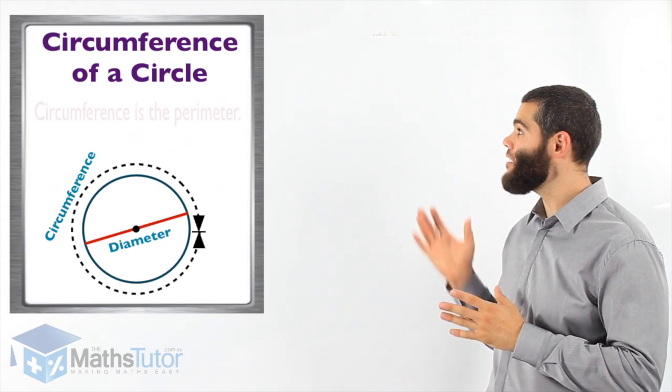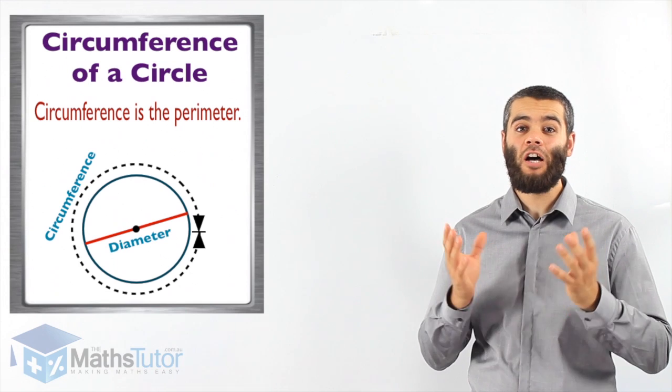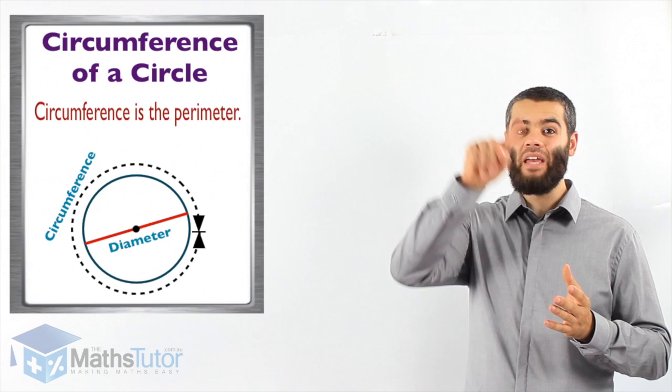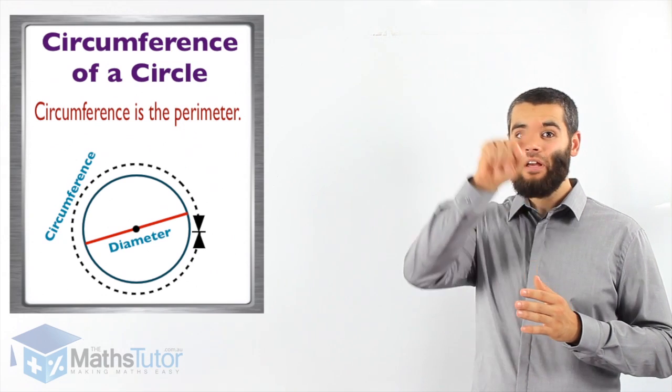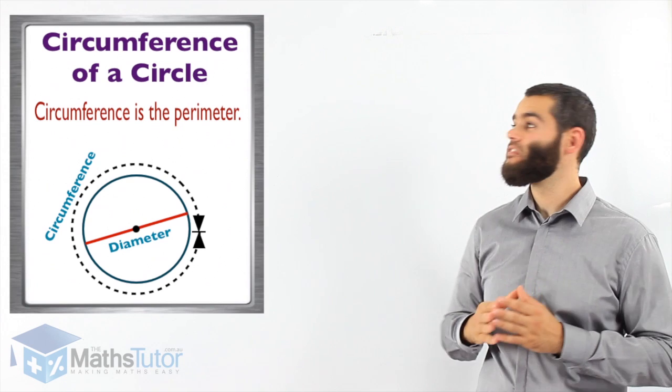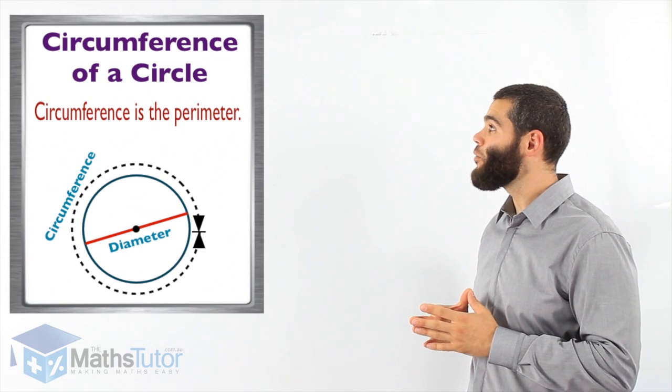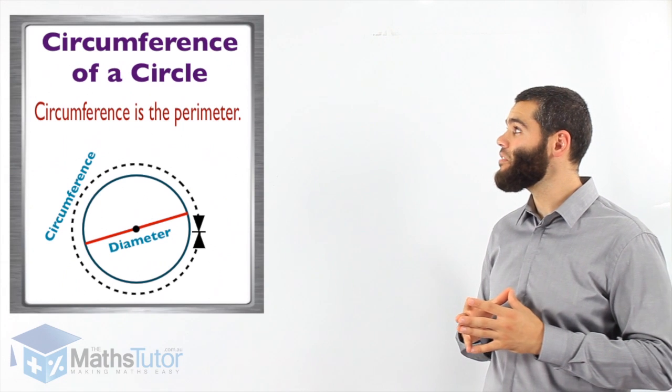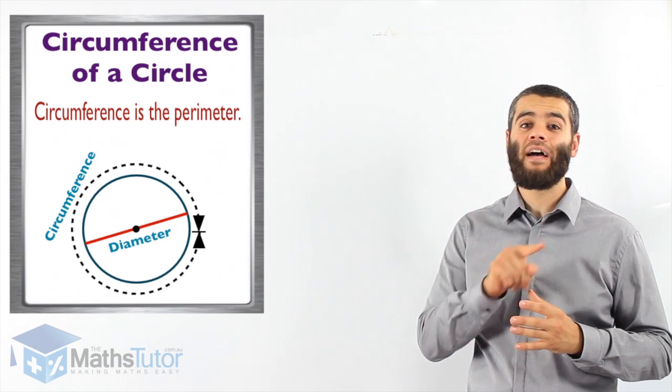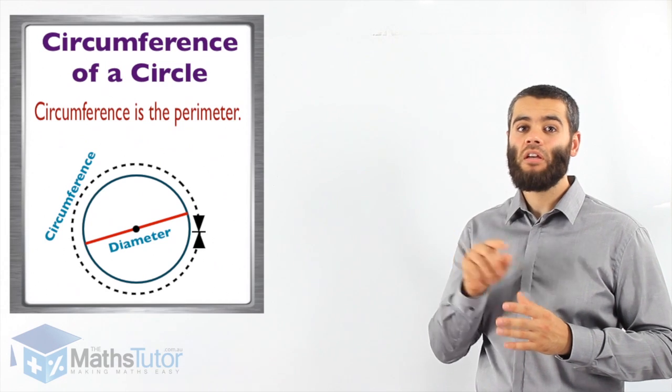Basically, the circumference is the perimeter of the circle. We know the perimeter, it's the outside, the actual boundary of the circle. As you can see here, we have the diagram. The circumference is basically the surrounding, the boundary of the circle.